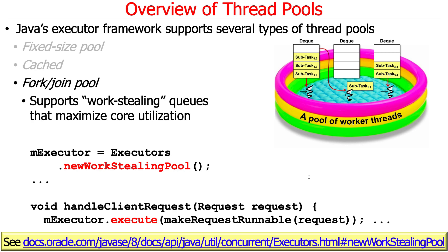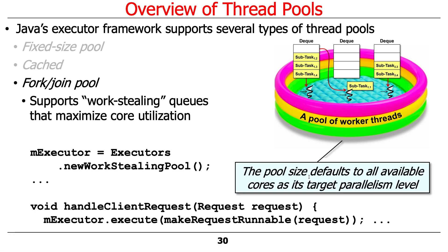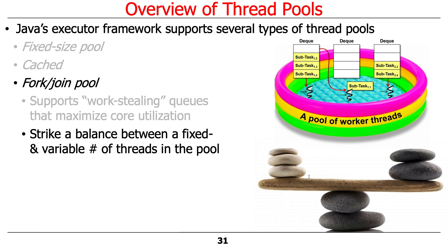The fork-join pool defaults to all available cores as its target parallelism level — if you make a fork-join pool out of the box with N cores, there'll be N worker threads in that pool. Under the hood, the system tries to allocate new threads and add them to the pool whenever operations would block, trying to keep the cores as busy as possible. The fork-join pool strikes a good balance between a fixed-size thread pool and a variable-size thread pool — it tries to reuse existing threads and only spawns new ones if it really has to. It's adaptive in that way.